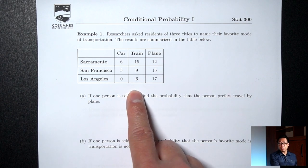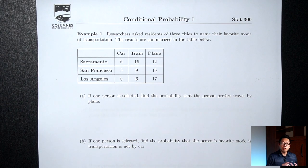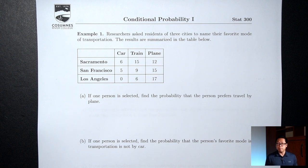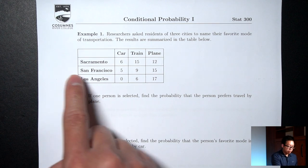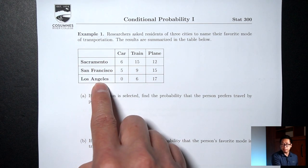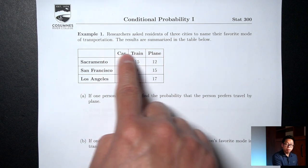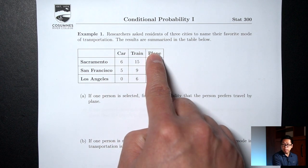What we have here is called a contingency table or a two-way table. It's usually used in situations where we're collecting two pieces of data, and most of the time it's two pieces of qualitative data. Here we're asking people what city do you live in — Sacramento, San Francisco, Los Angeles — and then we're also asking people what's your favorite mode of transportation: car, train, or plane.